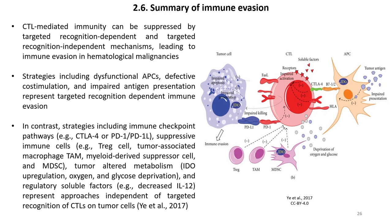To sum up the immune evasion landscape: CTL-mediated immunity can be suppressed by targeted recognition-dependent and targeted recognition-independent mechanisms leading to immune evasion. Strategies including dysfunctional APCs, defective co-stimulation, and impaired antigen presentation represent targeted recognition-dependent immune evasion. In contrast, strategies including immune checkpoint pathways, suppressive immune cells, tumor-altered metabolism, oxygen and glucose deprivation, and regulatory soluble factors represent processes independent of targeted recognition of CTLs on tumor cells.